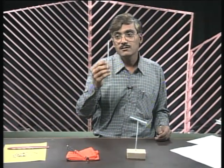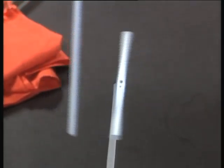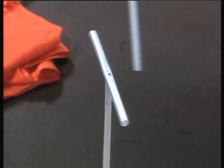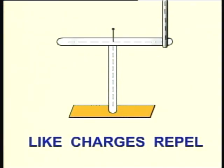Now, charge a straw by rubbing it with your hair. When we charge this straw and another straw by rubbing them with our hair and support one straw, let us see what happens when the two charged straws are brought near each other. Two similarly charged bodies repel each other — we can say like charges repel.